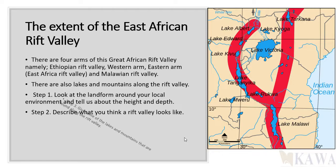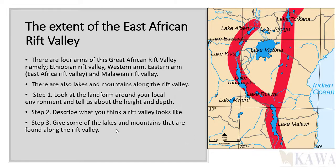Describe the rift valley and how it looks. Step three: give some of the lakes and mountains found along the rift valley — look through the atlas and name them. Also name the rivers, the ocean you see around here, and the lakes — for example, this one is called Lake Bisena. Name the countries too — what is the name of this country, this other country? Name the neighboring countries.